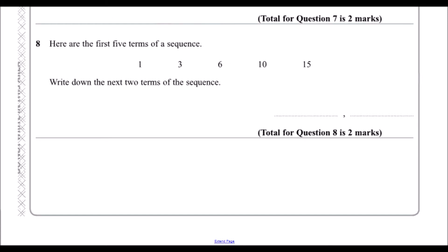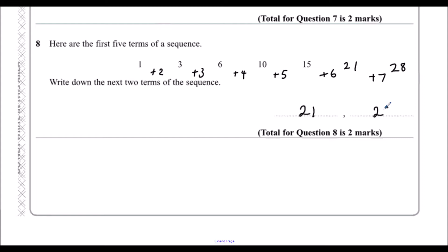Question 8: here are the first 5 terms of a sequence: 1, 3, 6, 10, 15. Write down the next 2 terms. It's gone up by 2, then 3, then 4, then 5 — so it's going up by 1 more each time. The next step is up 6, so 15 plus 6 is 21, then up 7: 21 plus 7 is 28. The next two terms are 21 and 28.